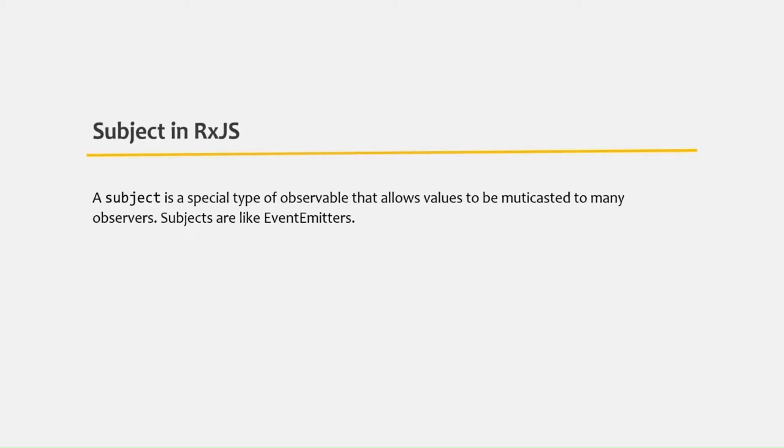In the last lecture we learned what a subject is - a special type of observable that allows values to be multicasted to many observers. We understood subject with a use case, learning that we can use it for cross-component communication. Now many of you might say we can also use an observable for that. So what is the difference between an observable and a subject? Let's try to understand that difference in this lecture.